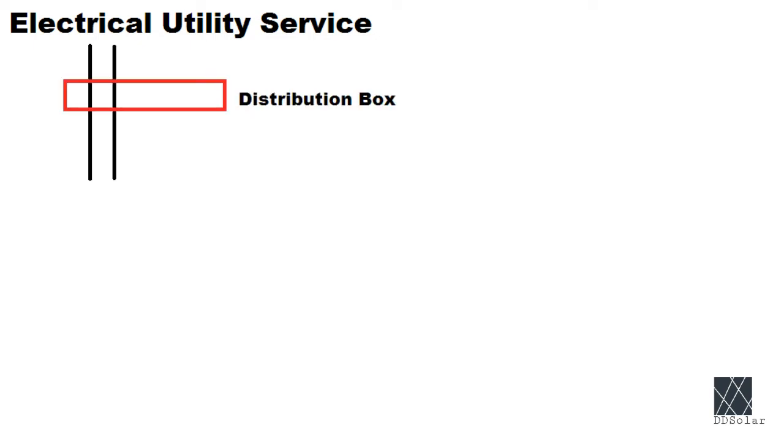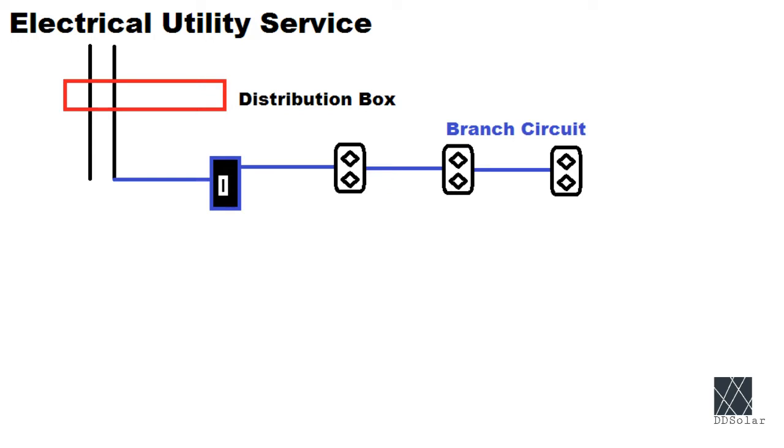This electrical power will enter a distribution box or a breaker box. This is where the power is distributed throughout your home. Inside this box are quite a few circuit breakers. Usually several of those circuit breakers are attached to one or more AC electrical outlets to use for various appliances in your home. These circuits proceed out of the distribution box almost like branches of a tree so it's not hard to see why they're often called branch circuits.